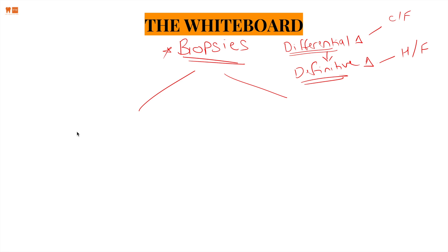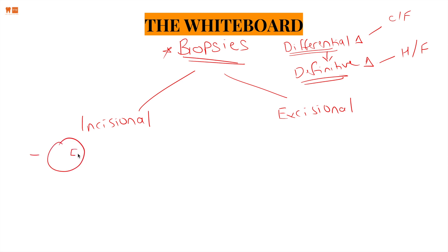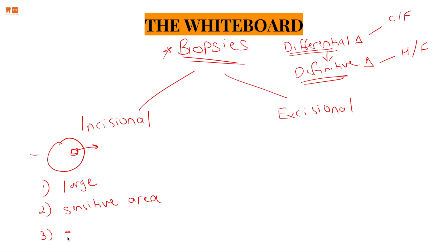There are two major types of biopsies: incisional and excisional. Incisional means you have the whole lesion but you're only going to take a portion of it out. Why? First, it's a lesion that is very large — if you take it out, you can damage sensitive areas like the lateral border of the tongue or floor of the mouth. Third, the reason you would want incisional biopsy is because you suspect a malignancy — very important. When you suspect a malignancy, you want incisional, because then you can reach a definitive diagnosis and then treat it using excisional.